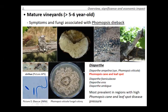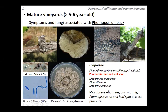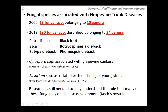Phomopsis dieback has been recently described as a disease and is most prevalent in regions with high Phomopsis cane and leaf spot disease pressure. Going back to what we knew in 2000, there were 15 different fungal species belonging to 10 genera. Today we have close to 130 fungal species belonging to 34 genera, largely thanks to new molecular detection techniques. There are still fungi recently being associated, such as Cytospora — known for causing cankers on fruit trees like apples and cherries — and Fusarium, recently found associated with decline in young vines.